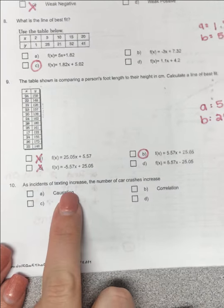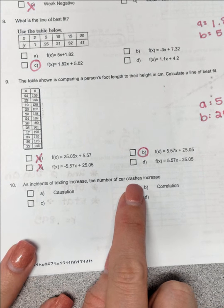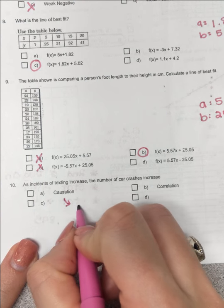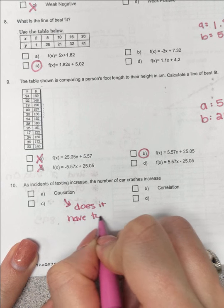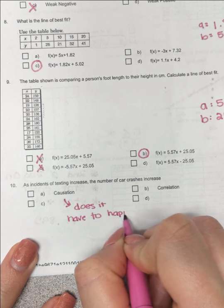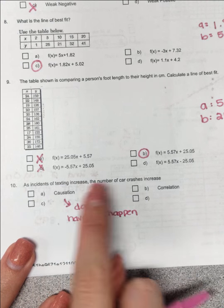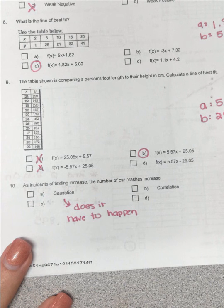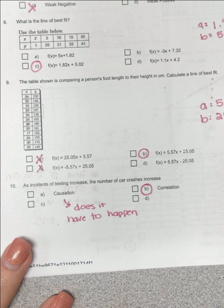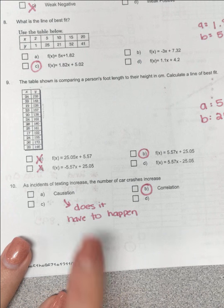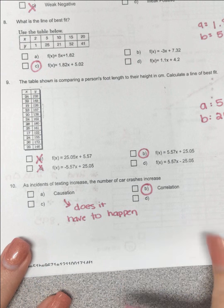As incidence of texting increase, the number of car crashes increase. So anytime you're talking about causation, ask yourself, does it have to happen? So if you are texting, do you have to get in a car crash? No. So this is simply a correlation. Texting does not always cause car crashes. Yes, it can, but just because you're texting, you do not have to have a car crash. So B, this is simply a correlation.